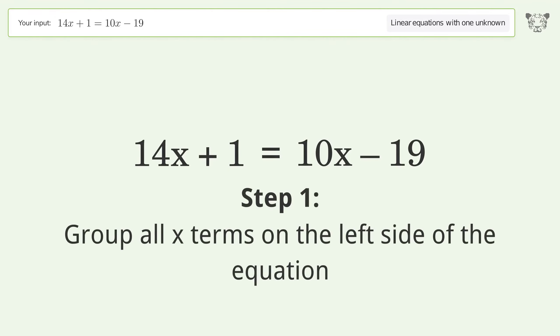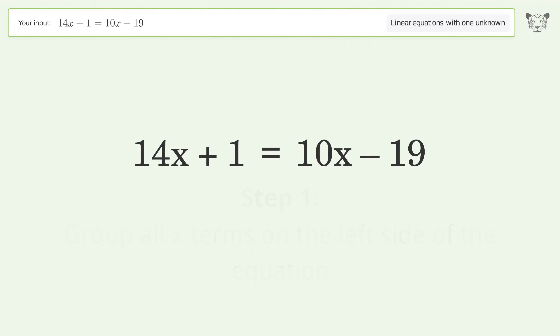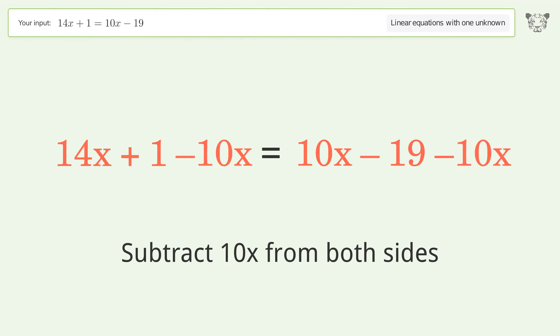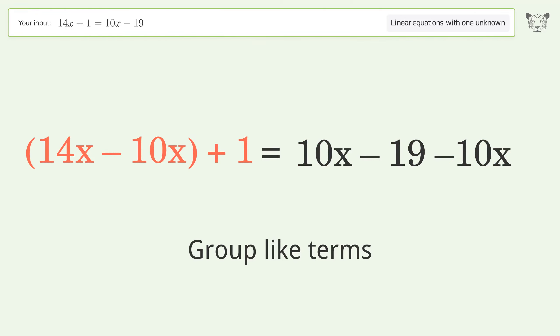Group all x terms on the left side of the equation. Subtract 10x from both sides. Group like terms. Simplify the arithmetic.